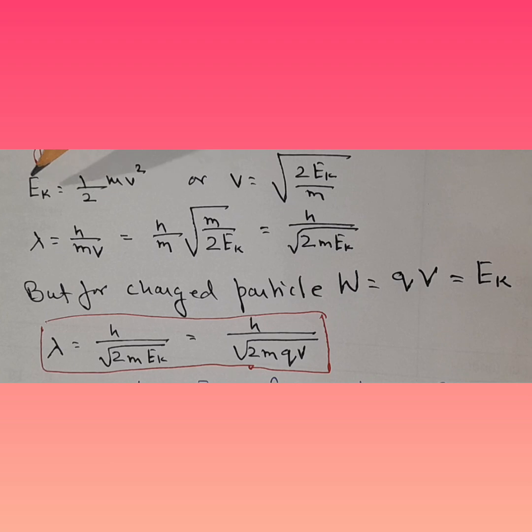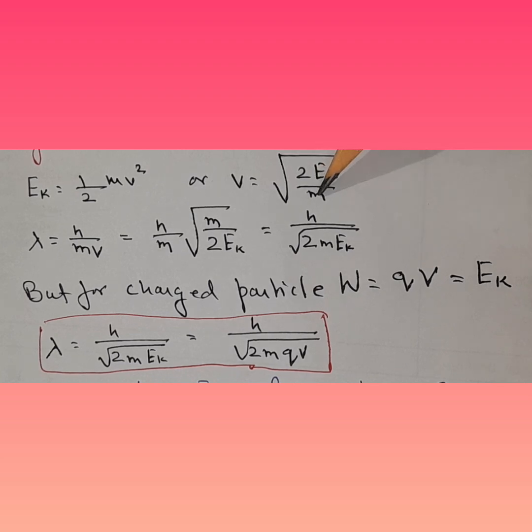We know kinetic energy is half mv square and velocity, or we can say velocity is equal to, what we do is, we shift this there, shift this down and then take root of v. So v is equal to square root of 2 Ek, that is energy kinetic, upon mass. This becomes the formula for velocity.